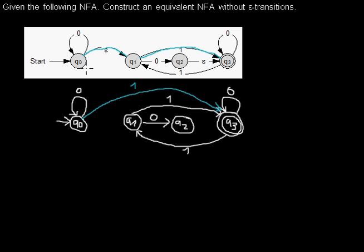When you are in Q0 and read a zero, you could take the loop, or you could take the epsilon transition and then take any transition with a zero symbol. That would be this transition, and it's the same as if you could directly go from Q0 to Q2 with a zero. So this becomes a new arc in the new automaton with a zero.